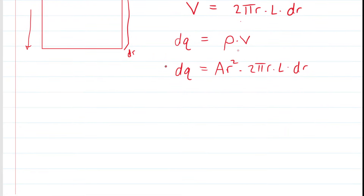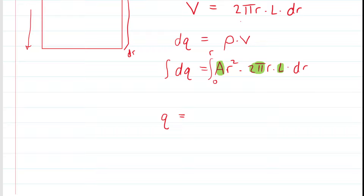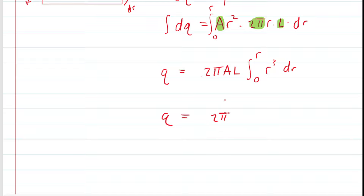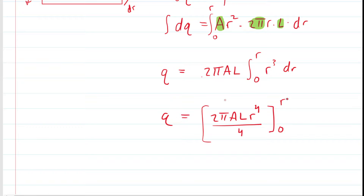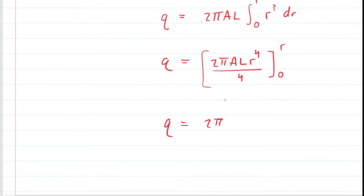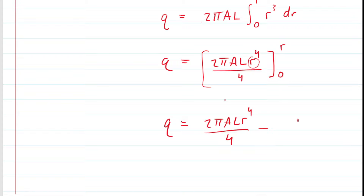To get the total charge on the Gaussian cylinder, we integrate. We integrate from a radius of zero all the way up to the complete radius of our Gaussian cylinder. Pulling out constants A, 2π, and L, we integrate r² times r, which is r cubed. Using the power rule, r cubed integrates to r⁴/4. Plugging in the upper bound r and lower bound 0, the lower bound zeros out, giving Q = 2πAL·r⁴/4 as the total enclosed charge for Part A.